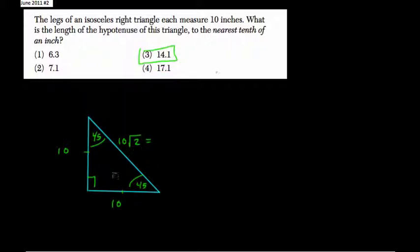Now there's a whole nice proof as to why this happens with this rule that it's the leg times the square root of 2. But we can at least show it quickly as the result of the Pythagorean theorem. So 10 squared plus 10 squared—leg squared plus leg squared—equals the hypotenuse squared.